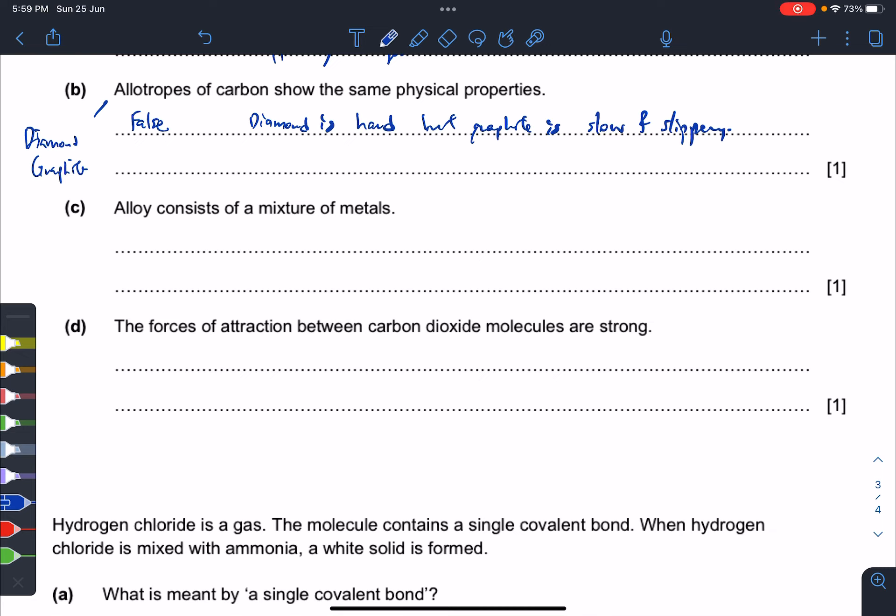C: Alloy is a mixture of metals—again false. Alloys are mixtures consisting of a metal and other metals. Then you have D: forces of attraction in CO2 are actually weak, so everything here is false. This is false: weak intermolecular forces of attraction between molecules in CO2.